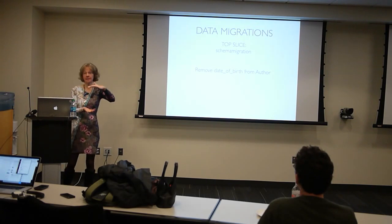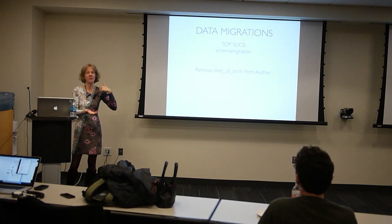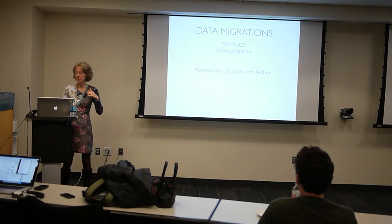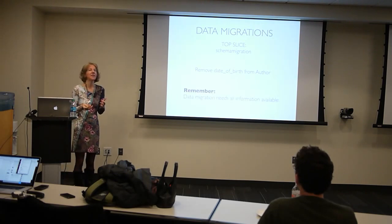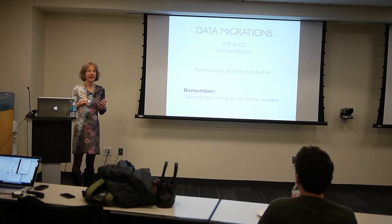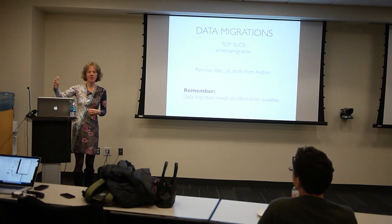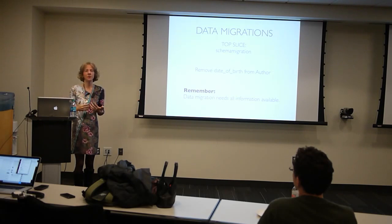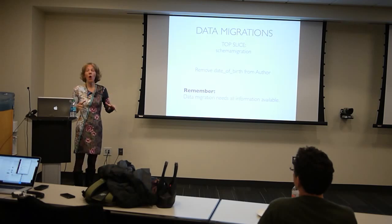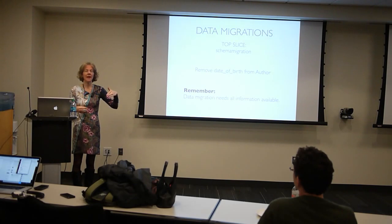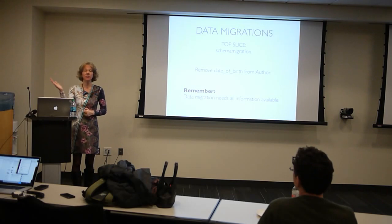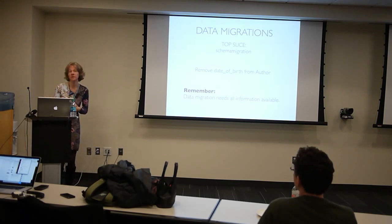Your top slice is another schema migration which will remove the date of birth from the author's model. The thing that tricks most people up about data migrations is that you would start off by first adding the date of birth to the profile, then removing it from the author. But once you've removed it from the author, you're in trouble because you don't have the data available anymore. So data migrations need all the information available — create your first schema migration to add any fields you need, data migration to move data over, and then your second schema migration is where you remove those redundant fields.